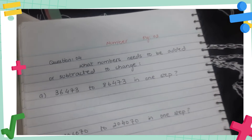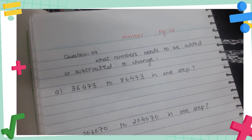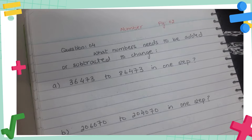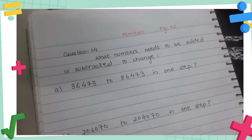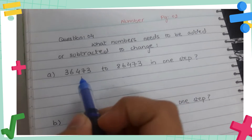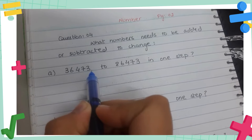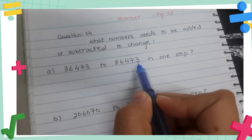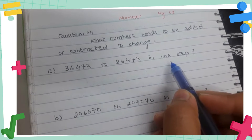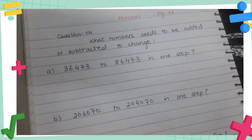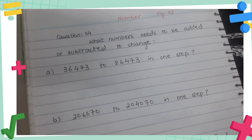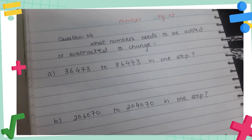So question number four is: what number needs to be added or subtracted to change one number to another? They give us choices — either it needs to be added or subtracted. Part one says 36473 and we have to change it into 86473. Make sure you do it in one step. I'm sorry for the voice — I am going through viral fever, so bear with me.